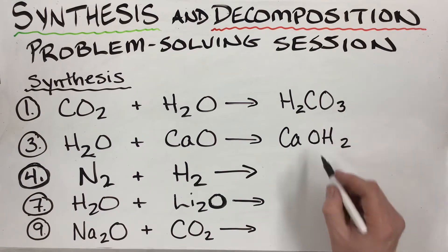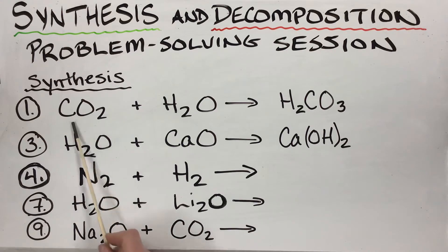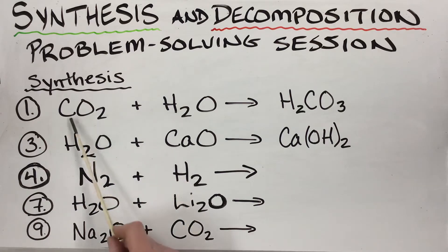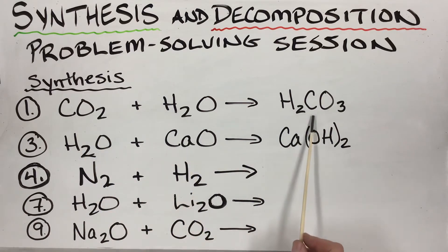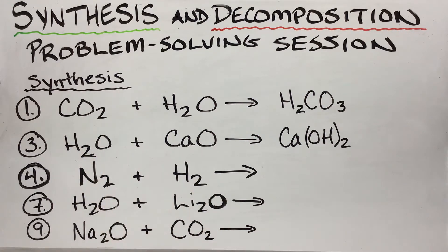The next one: a metal oxide and water. A non-metal oxide in water gave us an acid; a metal oxide in water gives us the opposite — a base. Ca goes first as our positive ion, and we combine the water's hydrogen with the oxygen to make hydroxide. That gives us calcium hydroxide. Notice the pattern: non-metal oxide + water → acid; metal oxide + water → base.